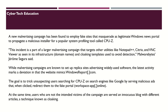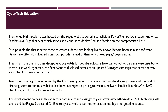While advertising campaigns are known to set up replica sites for widely used software, the latest activity marks a deviation in that the website mimics windows-report.com. The goal is to trick unsuspecting users searching for CPU-Z on search engines like Google, by serving malicious ads that redirect them to fake portals such as workspace-app.online, where victims are presented with a cloaked page using different articles — a technique known as cloaking.